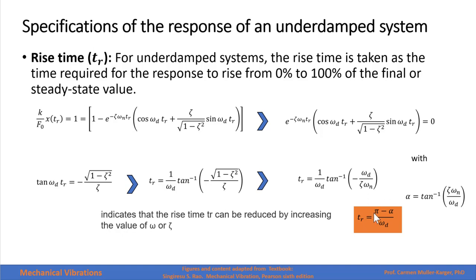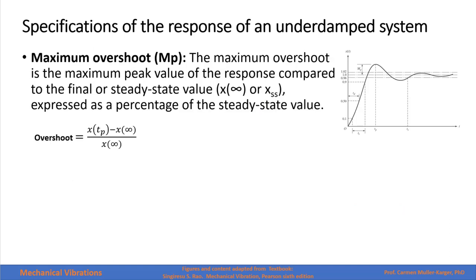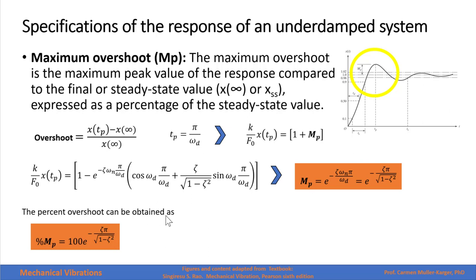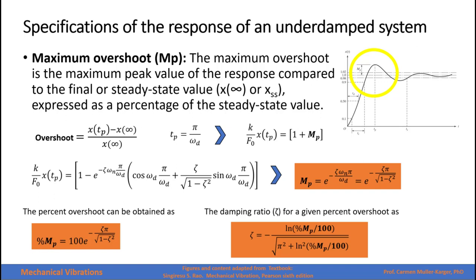The maximum overshoot is the maximum peak value of the response compared to the final or steady state value (as x goes to infinity), expressed as a percentage of the steady state value. Evaluating at the peak time, cosine of pi equals negative 1 and sine of pi equals 0, leaving the expression with only the exponential term: e to the negative zeta times omega_n times pi over omega_d. The percentage overshoot is this value multiplied by 100. The damping ratio for a given percentage overshoot can also be back-calculated from this expression.